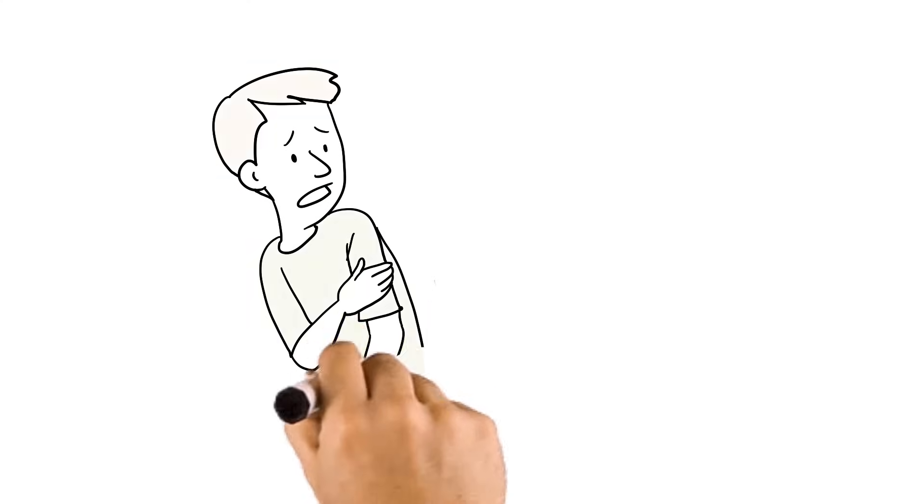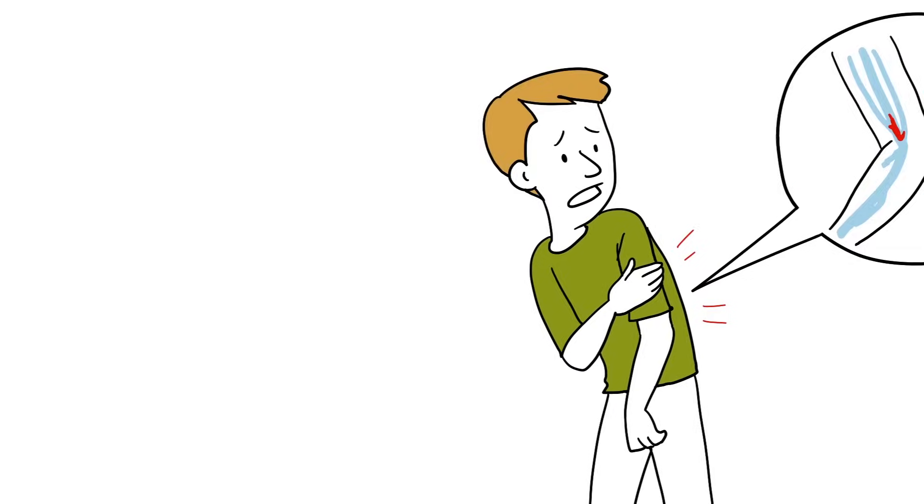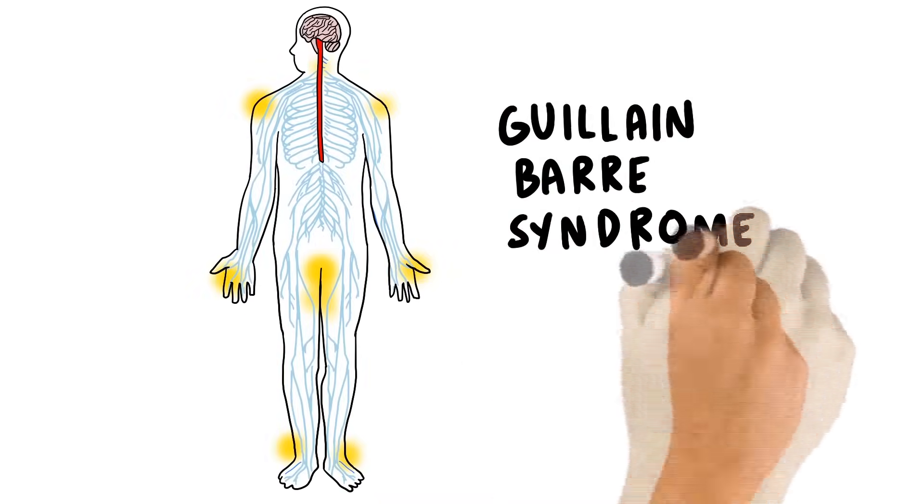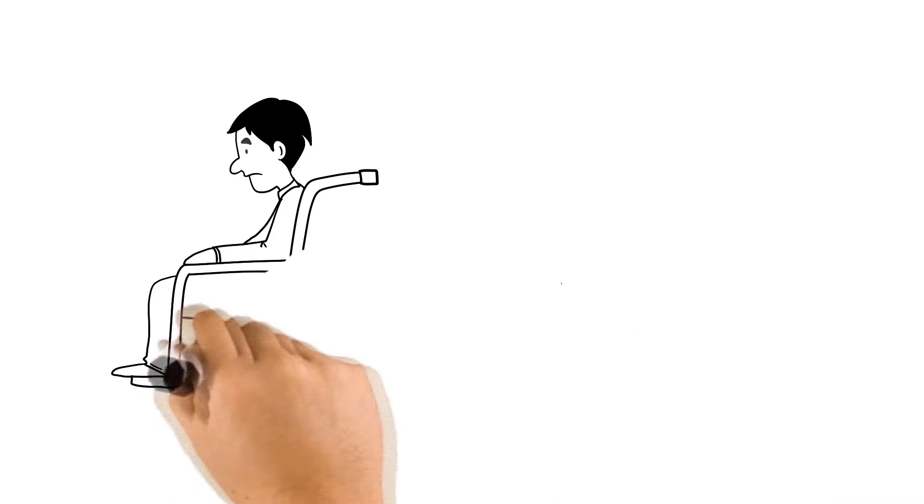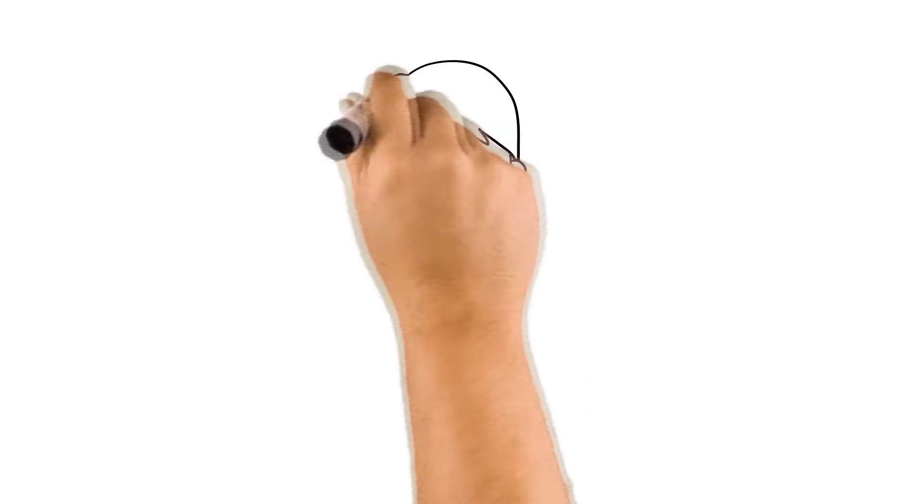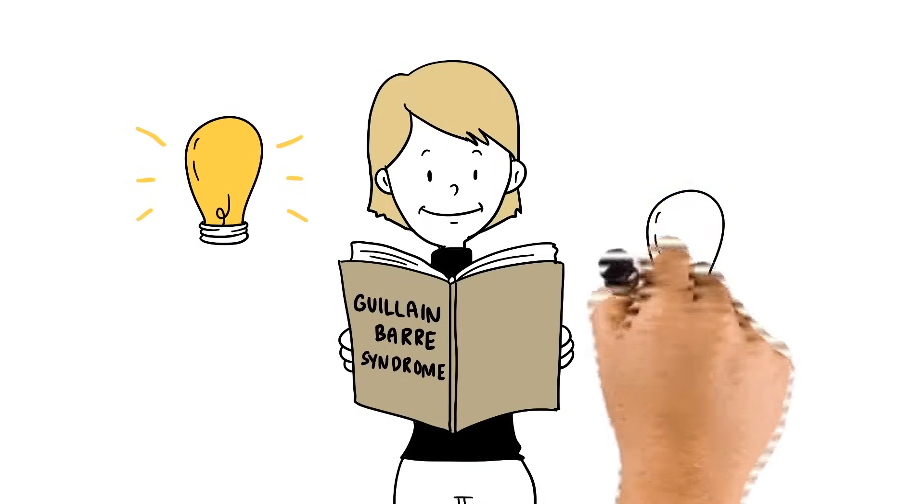But sometimes your muscles don't move when you want because of a nerve injury or disease. One disease that can do that is Guillain-Barre syndrome. We just call it GBS for short. Maybe someone you know has been diagnosed with GBS, or maybe even yourself. If so, you probably want to know more about GBS and how it involves nerves like Ned.